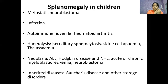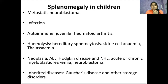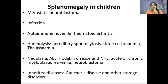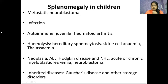Splenomegaly in children occurs in the following conditions: metastatic neuroblastoma; infection; autoimmune disease such as juvenile rheumatoid arthritis; hemolysis from hereditary spherocytosis and sickle cell anemia; neoplasia including acute lymphatic leukemia, Hodgkin's disease, NHL, acute and chronic myeloblastic leukemia, and neuroblastoma; and inherited diseases such as Gaucher's disease and other storage disorders. Infection is the most common cause.